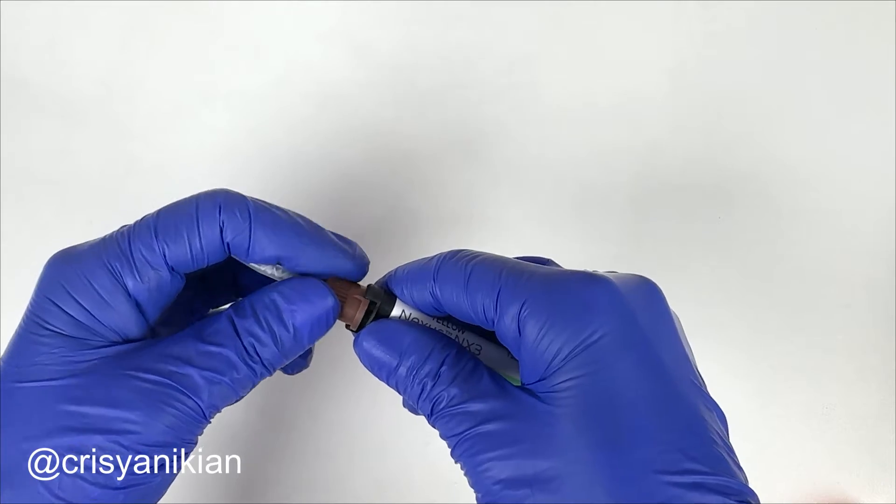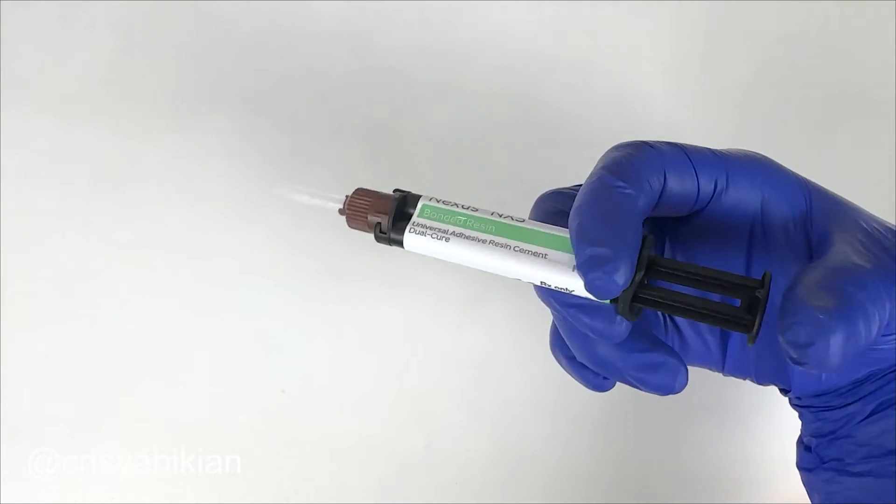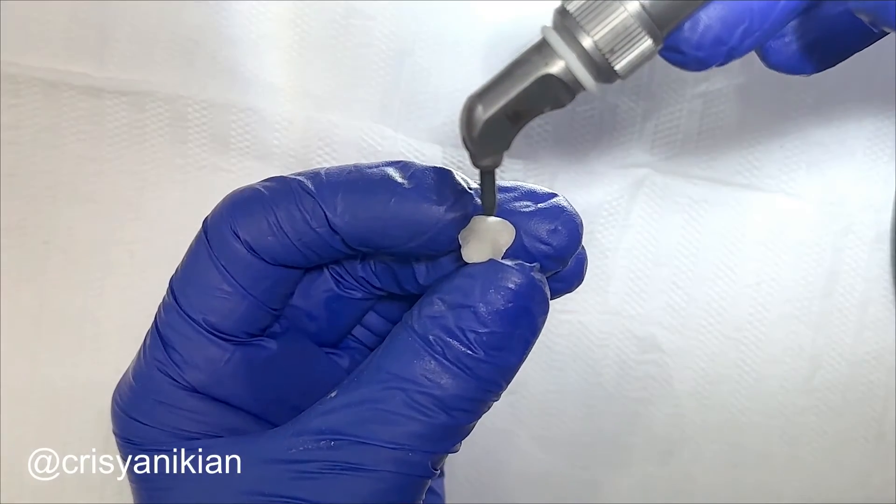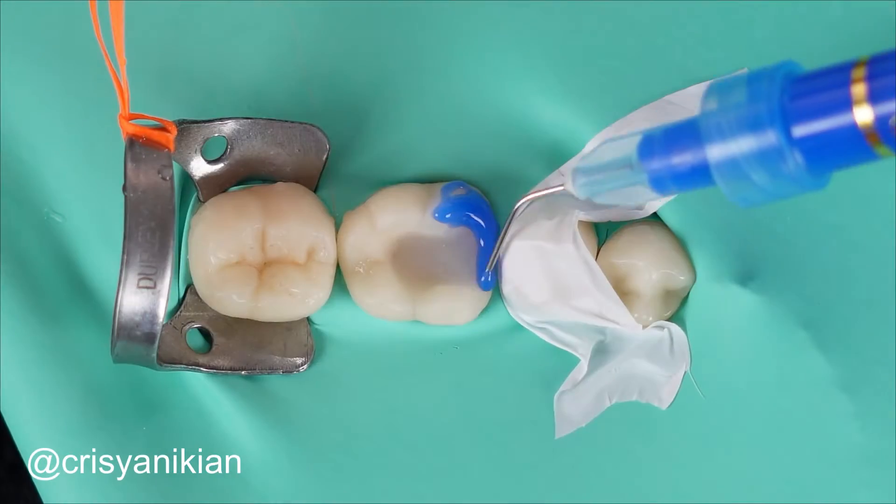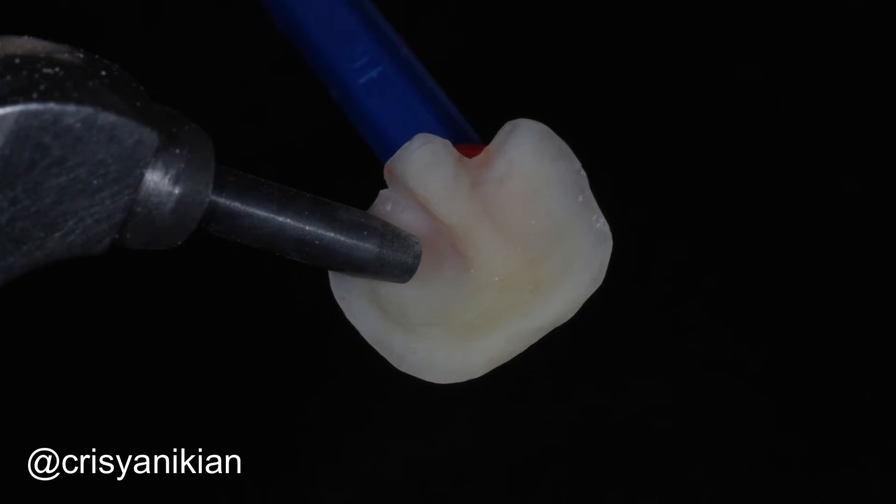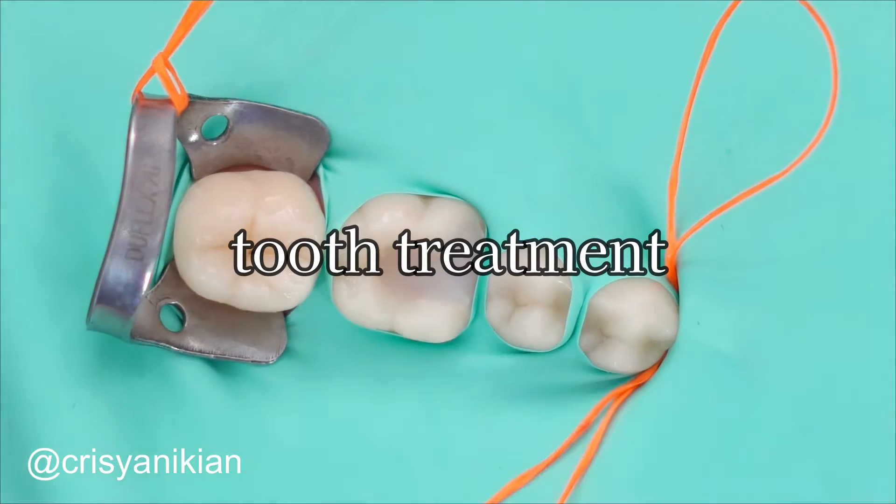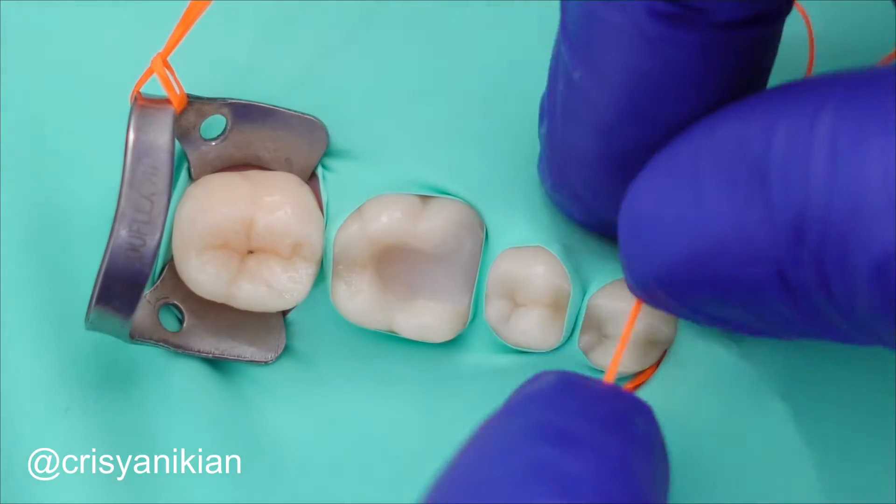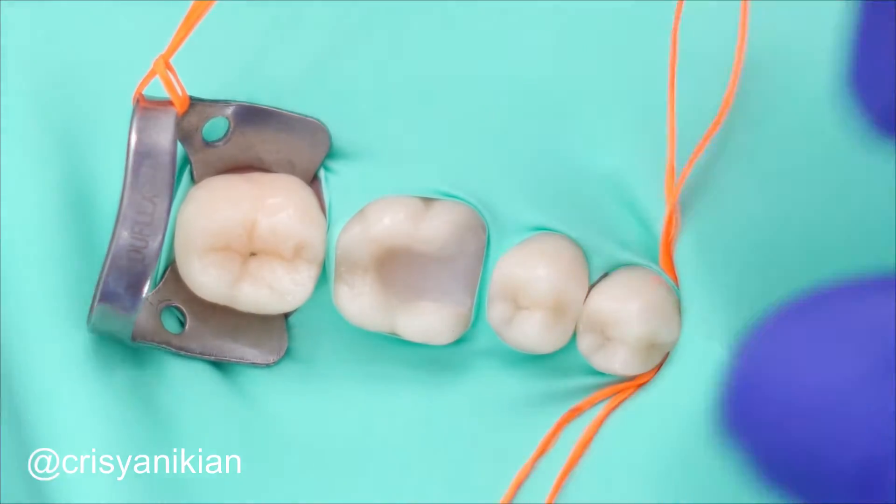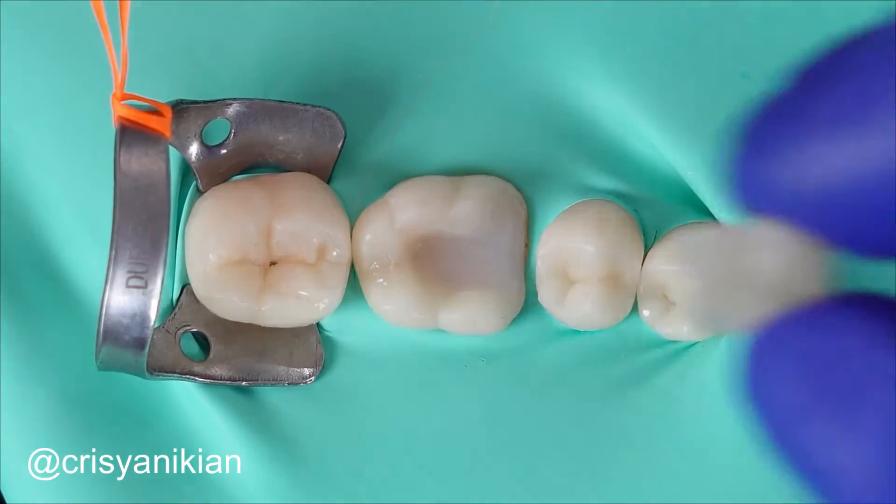Now it's time for onlay bonding, which involves two preliminary steps: onlay treatment and tooth treatment. To speed up the procedure, you can perform tooth treatment while your assistant handles onlay treatment. For tooth treatment, perform the absolute isolation. If possible, isolate not only the prepared tooth but also the mesial and distal adjacent teeth to maintain proximal contact. Fit the onlay in position on the tooth again to check if the absolute isolation is not interfering with its proper seating.